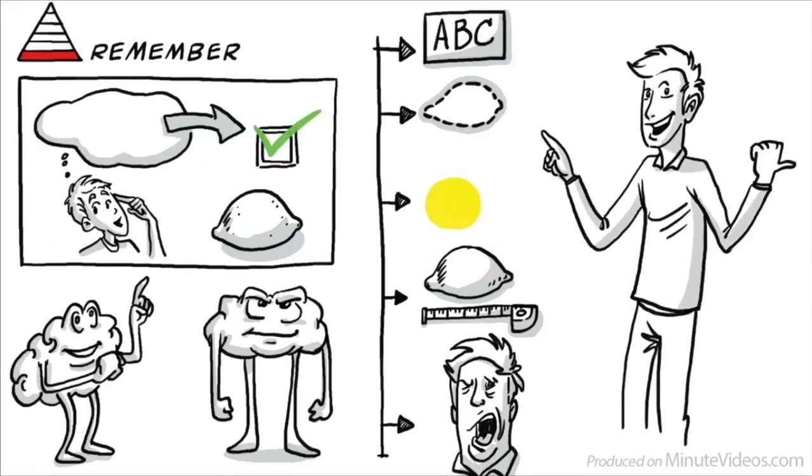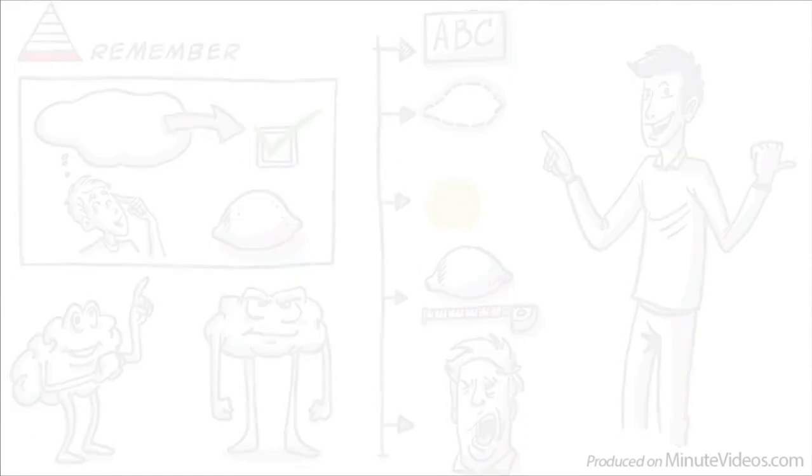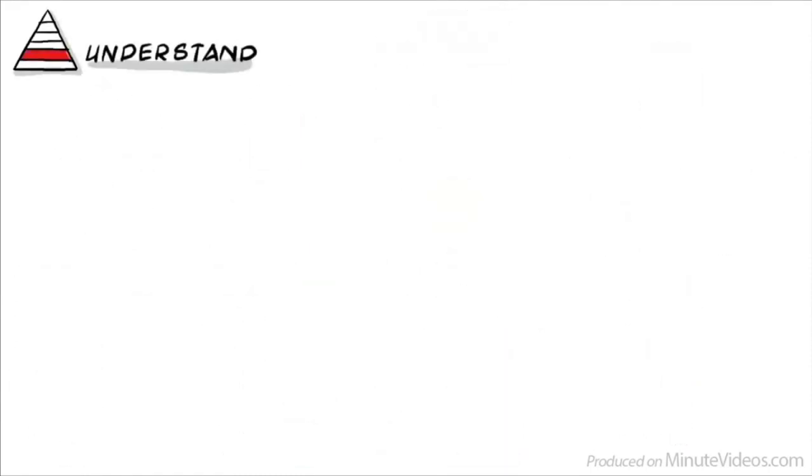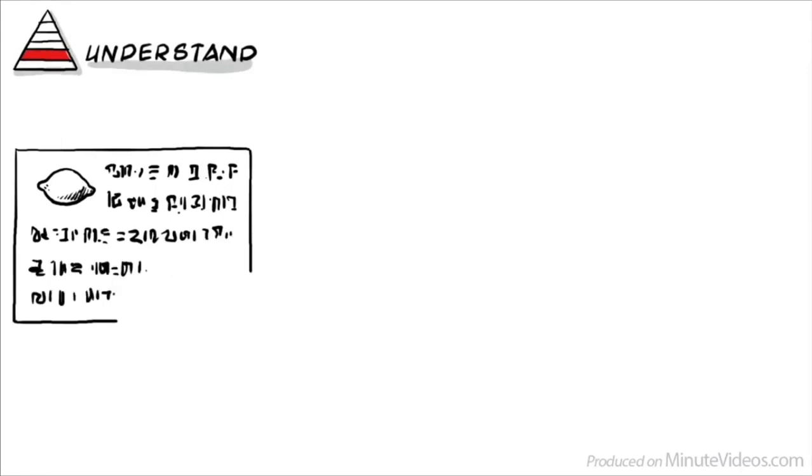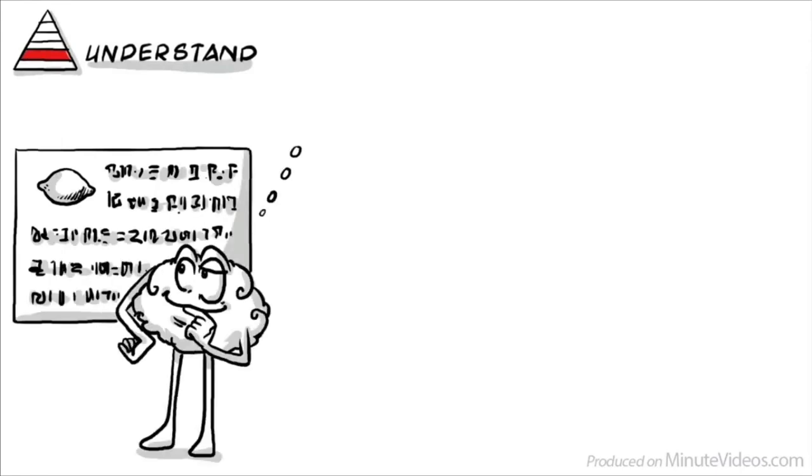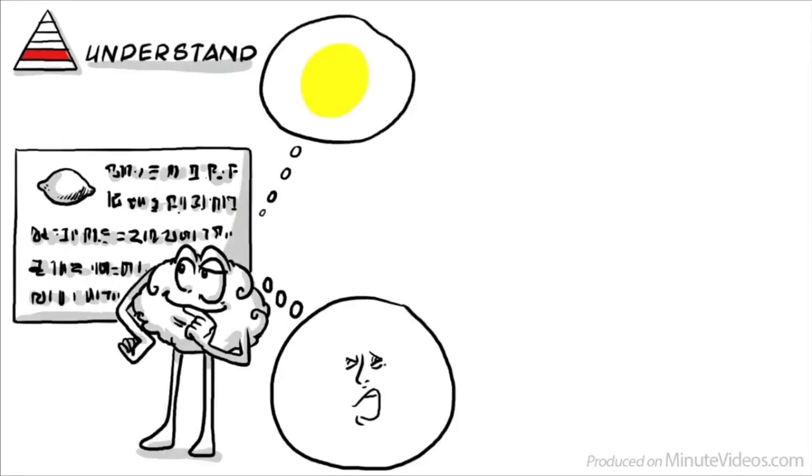Once we memorize these essentially meaningless facts, we move to the second level of learning. On level 2, we learn to understand. We begin to decode information and learn that a lemon is yellow when it's ripe to eat and if we take a bite, then it's really super sour.